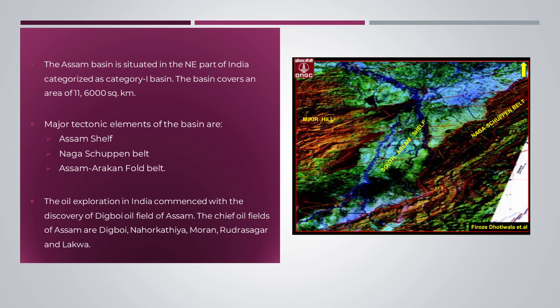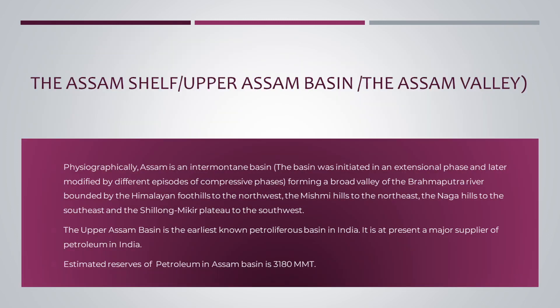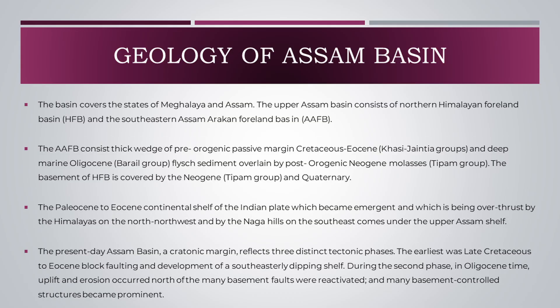The chief oil fields of Assam are Digboy, Nahorkathia, Maran, Rudrasagar, and Lakhua. Physiographically, Assam is an intermontane basin, forming a broad valley of the Brahmaputra River bounded by the Himalayan foothills to the northwest, the Mishmi Hills to the northeast, the Naga Hills to the southeast, and the Shillong-Mikir Plateau to the southwest. The Upper Assam Basin is the earliest known petroliferous basin in India and is at present a major supplier of petroleum. Estimated reserves of petroleum in Assam Basin is 3,180 MMT. The basin covers the states of Meghalaya and Assam.